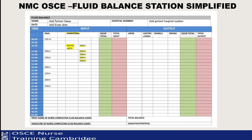Your next step is to add the parenteral fluids - that is your IV fluids. As you can see on screen, there are three columns for parenteral fluids. In the first column, at the time you started the fluid, put the name of the fluid - what bag you put up. So at 10 o'clock we put up normal saline, so we write 'normal saline' at 10 o'clock. Then count your lots - in this scenario we're giving the fluid over 5 hours at 100ml per hour.